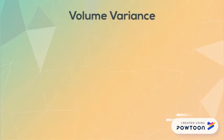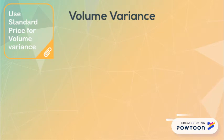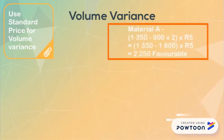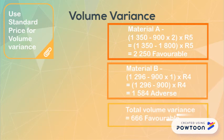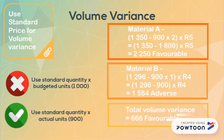For our volume variance we will always use the standard price for calculations, which results in a material A favourable variance and a material B adverse variance. Note that you should never use the standard quantity multiplied by budgeted units when calculating the volume variance, but the actual units, because this is your flexed quantity.